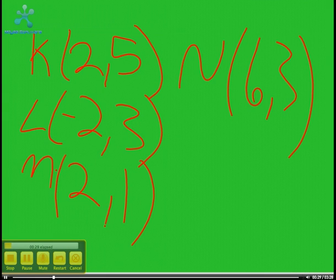On this slide, K equals (2, 5), L equals (-2, 3), M equals (2, 1), and N equals (6, 3).